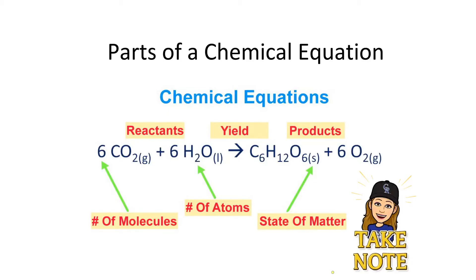Key parts of a chemical equation are the reactants, the yield sign. So in chemistry, instead of using an equal sign, we use a forward arrow to represent yields. And then to the right of the yield sign are the products.